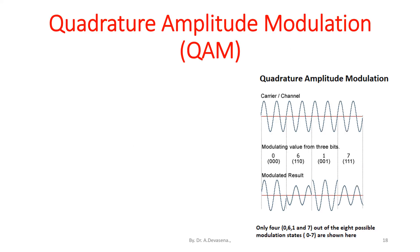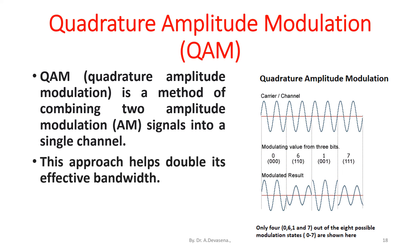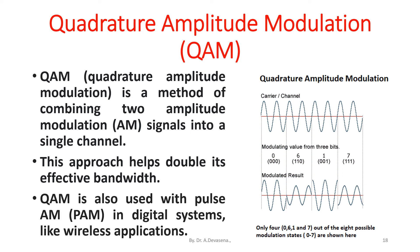Quadrature amplitude modulation (QAM) is a method of combining two amplitude modulation signals into a single channel, which helps double its effective bandwidth. QAM is also used with pulse amplitude modulation (PAM) in digital systems such as wireless applications.